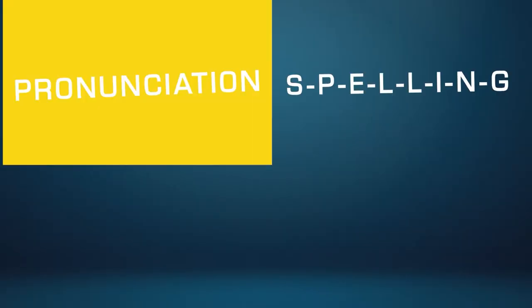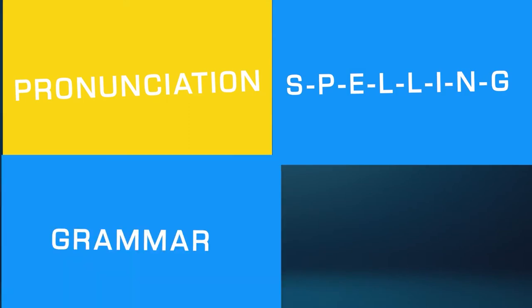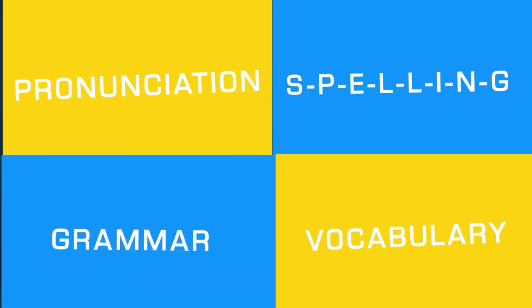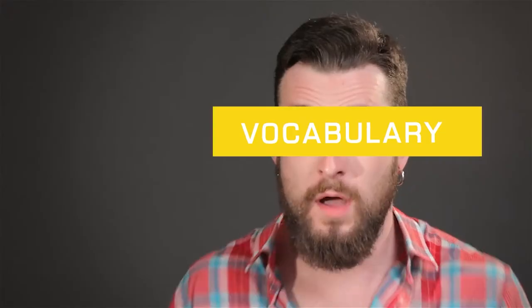Now we are going to look at some of the differences between British English and American English. There are differences in pronunciation, spelling, grammar, and vocabulary. Probably the most confusing difference is vocabulary. This can even be a bit confusing for native English speakers, as some words have completely different meanings in British English than they do in American English.